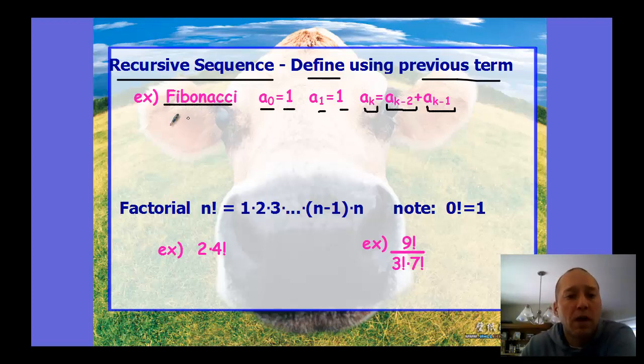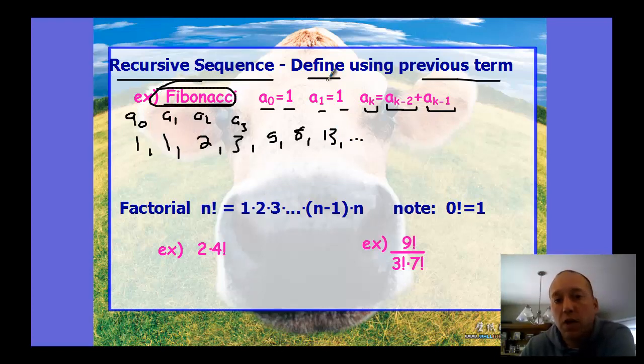If a₀ is 1, if a₁ is 1, then a₂ is found by adding the two previous terms, so 1 plus 1 would be 2. A₃ is adding the two previous terms, so 2 plus 1 is 3. That continues on: 3 plus 2 would be 5, 5 plus 3 is 8, 8 plus 5 is 13. This is Fibonacci's pattern, which is a very famous recursive sequence or recursive pattern.